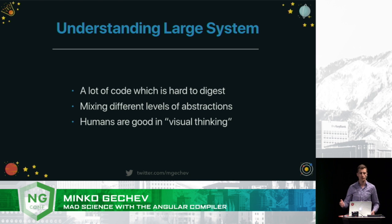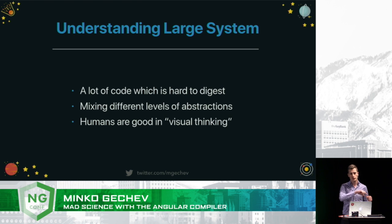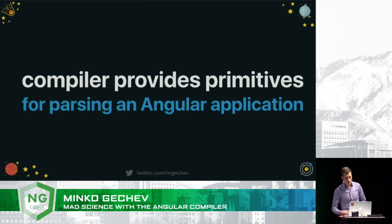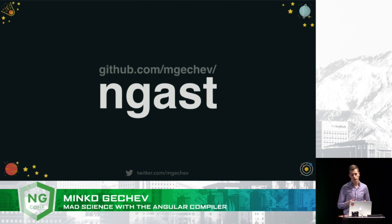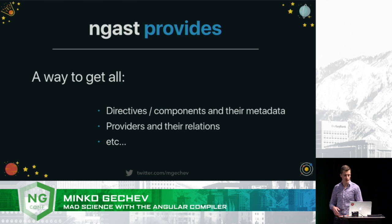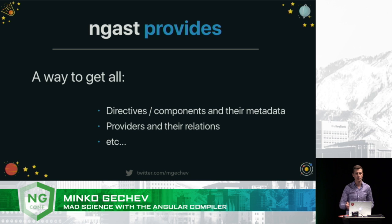So that's why, because people are good at visual thinking, there are a lot of tools for reverse engineering of apps — for instance, for Java and C Sharp, there are a lot of tools which visualize our classes as boxes and draw arrows between them so we can see their relations. I was thinking to build something like this for Angular by using the Angular compiler, of course. And in order to provide a slightly higher API on top, I built a wrapper called ng-AST. With ng-AST, this is a library that you can very easily parse your project, get all the directives, components and their metadata, also providers, their relations, pipes, and so on.